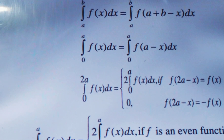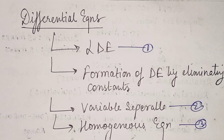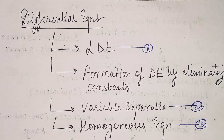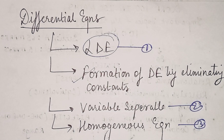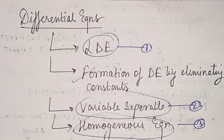Next is Differential Equations. For a given question, identify which form it belongs to: linear differential equation (LDE), variable separable, or homogeneous equation. For formation of differential equations by eliminating constants — if there are two constants, differentiate the function twice so the constants are eliminated. Differential equations is all about identifying the type of equation first, then solving accordingly.